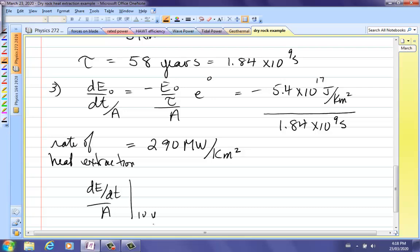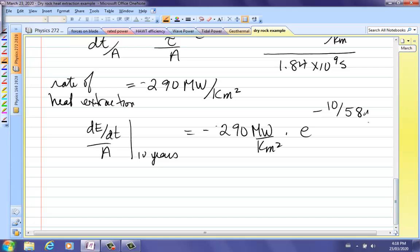That is a negative. I mean, you're extracting, the heat's going down. So it's 290 megawatts per kilometer squared times e to the minus 10 years over the time constant, 58 years. So that's where the, that's why I put it in years because that was in years. And so we're now extracting at slightly less. But still, after 10 years, 250 megawatts per square kilometer. That's the end.